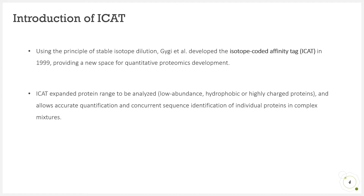In 1999, the isotope-coded affinity tag technology was introduced using the principle of stable isotope dilution, providing a new space for quantitative proteomics development. The ICAT technology has expanded the range of proteins that can be analyzed, such as low-abundance proteins, hydrophobic proteins, and highly charged proteins. It allows accurate quantification and concurrent sequence identification of individual proteins in complex mixtures.